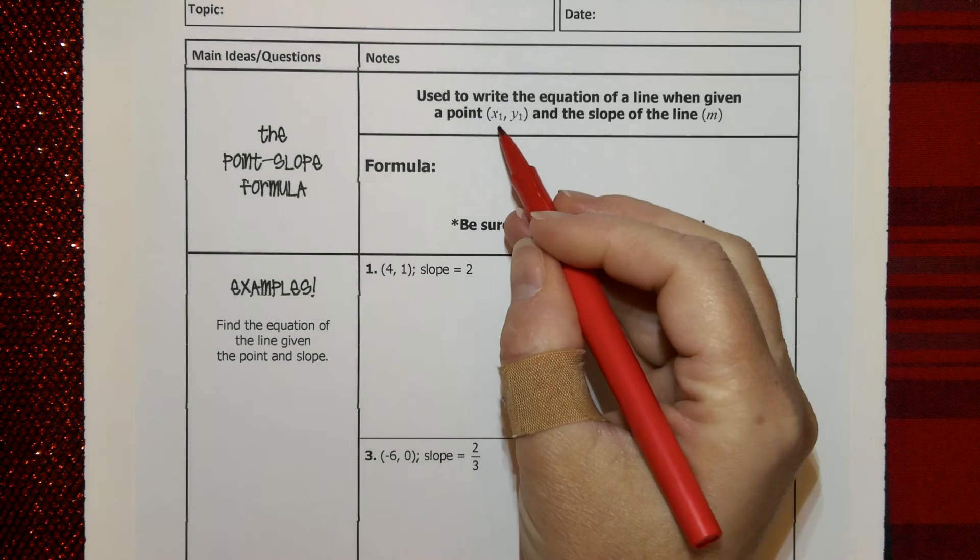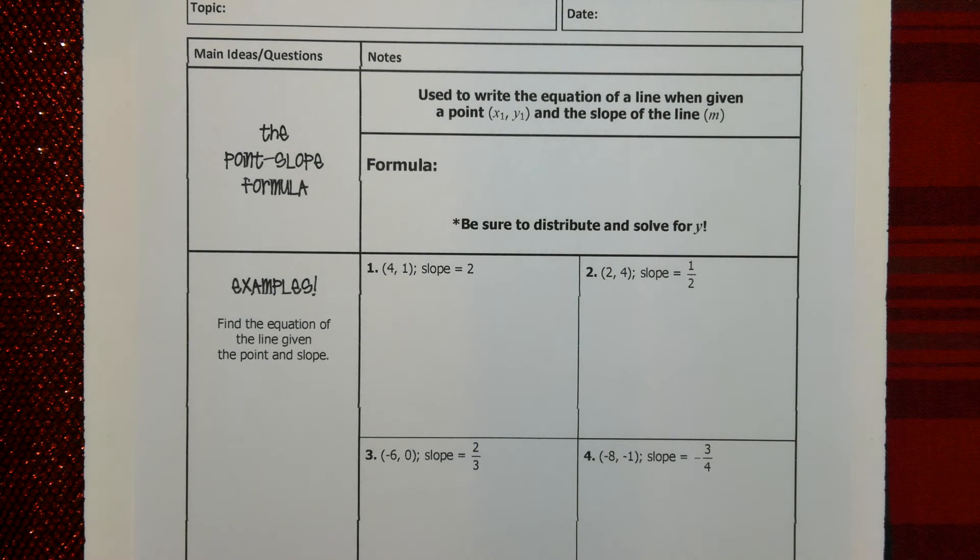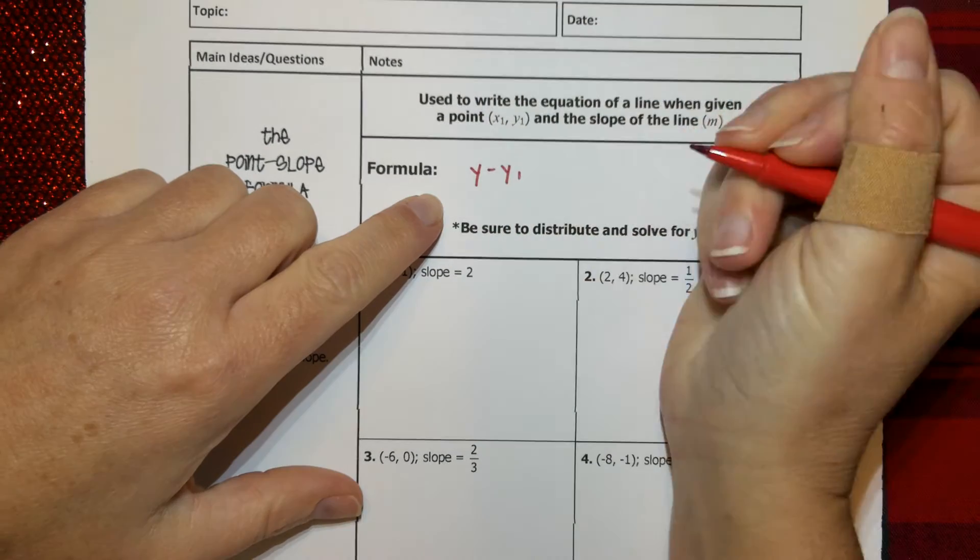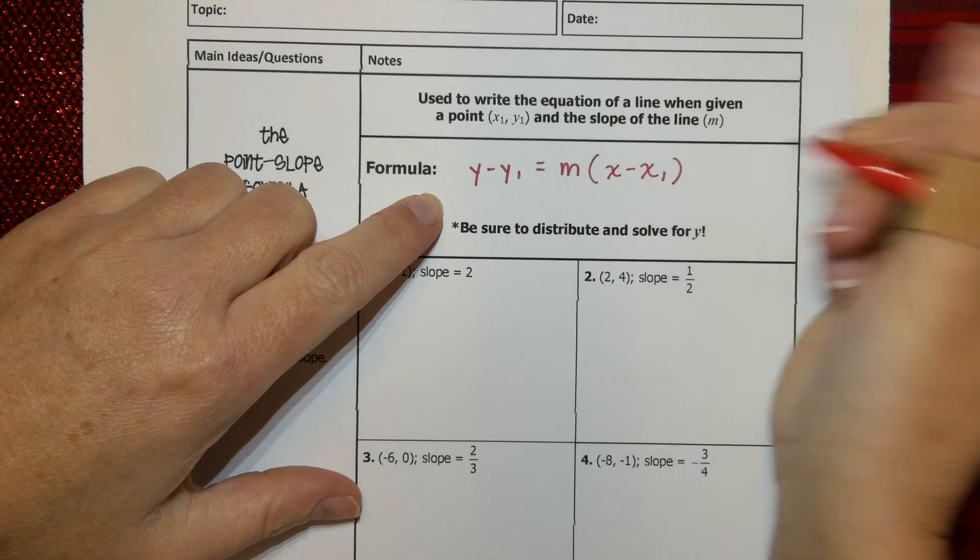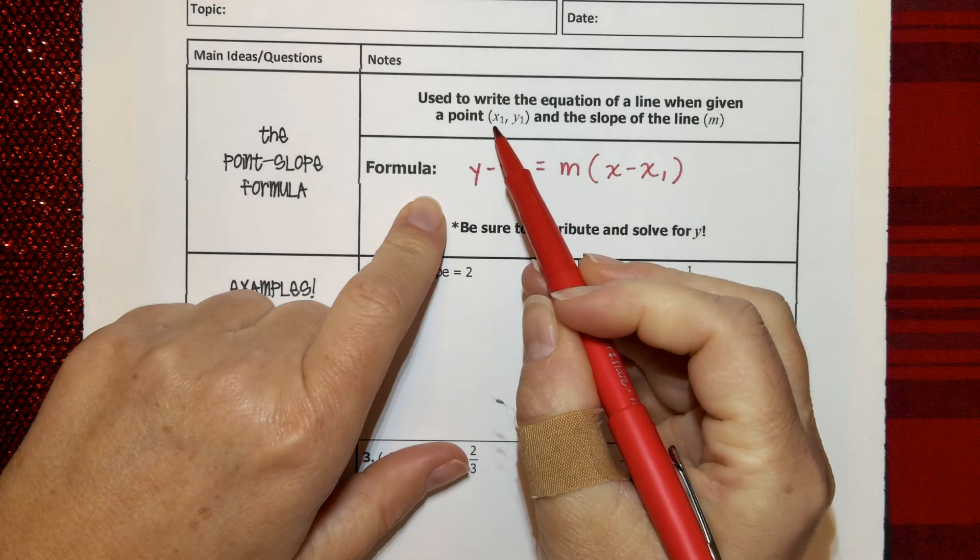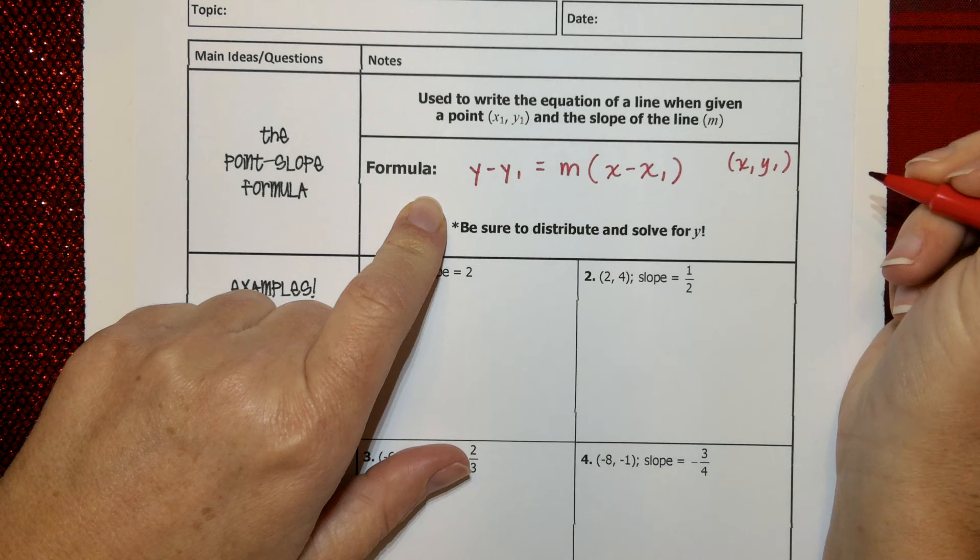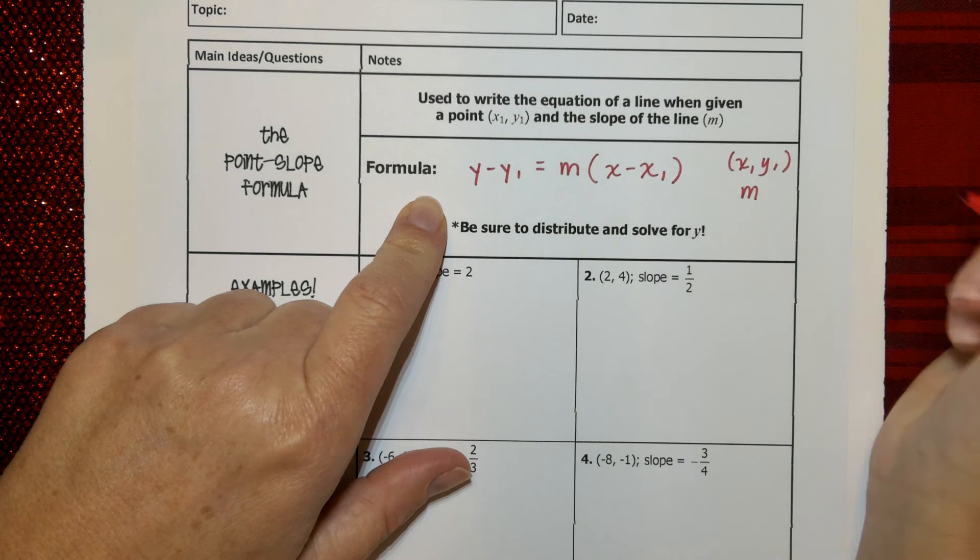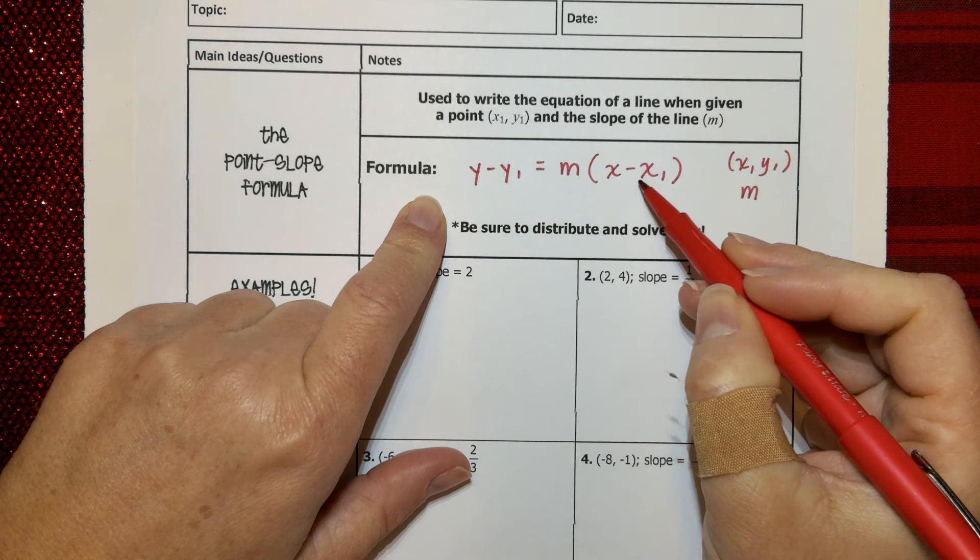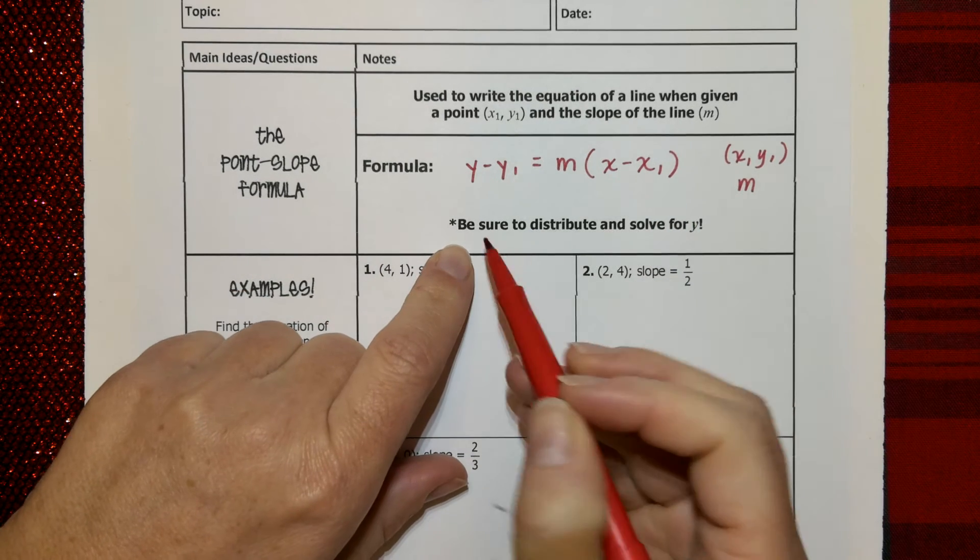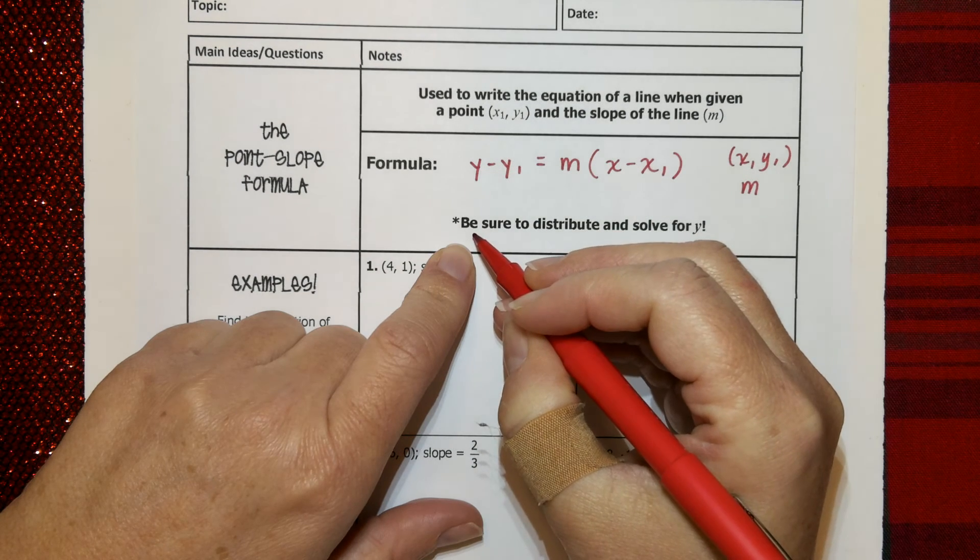Point-slope formula. It's used to write the equation of a line when you are given a point, X1 and Y1, and the slope of a line represented by M. So again, I'll write the formula here. It's Y minus Y1 equals M, which is your slope, times in parentheses X minus X1. And again, if you look up here, they're telling you you will be given an ordered pair. You will be given the coordinates X1 and Y1. They will give you an ordered pair, and they will give you slope. Your job will be to put these numbers in the correct spots and then manipulate the equation so that we end up in slope-intercept form. So here the directions are going to, they're kind of telling you that. Be sure to distribute and then solve for Y.